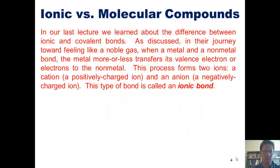In our last lecture, we learned about the difference between ionic and covalent bonds. As discussed in their journey toward feeling like a noble gas, when a metal and a non-metal bond, the metal more or less transfers its valence electrons to the non-metal. This process forms two ions: a cation, which is a positively charged ion, and an anion, which is a negatively charged ion. This type of bond is called an ionic bond.